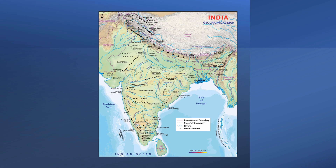India is in the continent of Asia. The land that makes up India comprises the mainland and several islands. The mainland of India is a large peninsula bounded by seas on three sides. Lofty mountains in the north separate it from the rest of Asia. India is rich in natural resources and has diverse physical features.